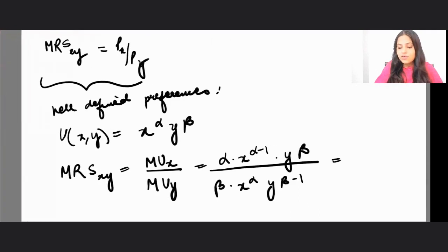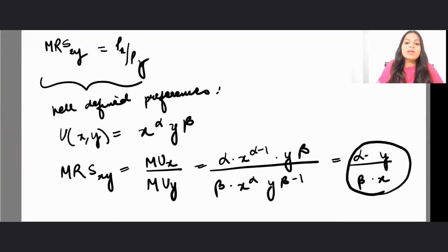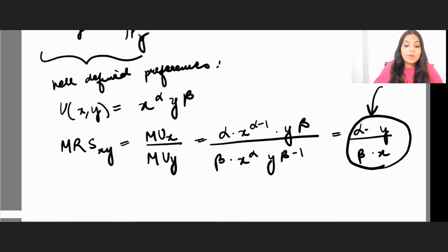If you solve for this, you will get alpha times y upon beta times x. This is how we used to define our utility function.